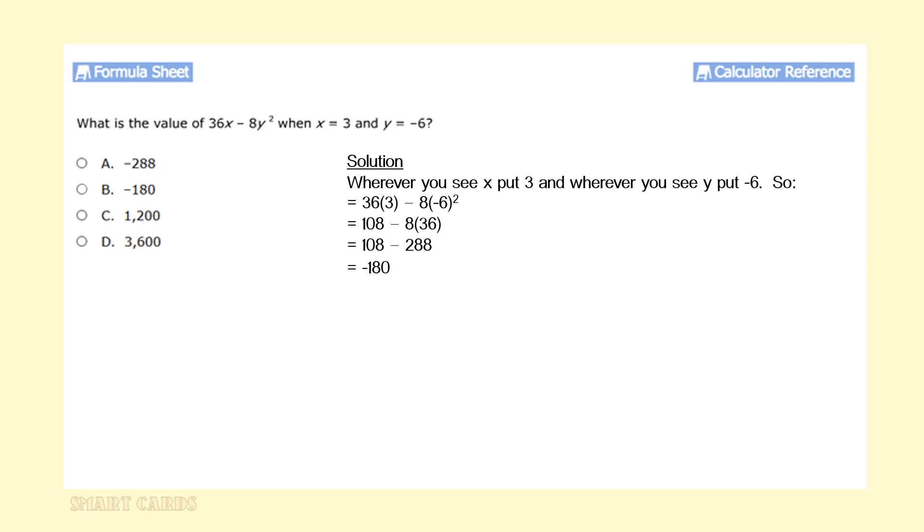Our order of operation says that we can multiply 3 times 36 to get 108, but before we multiply 8 times negative 6, we have to raise the negative 6 to the second power. When we do that, we're going to get 36. We go from 108 minus 8 times 36 to 108 minus 288, and that's going to give us negative 180, which would be answer option B.